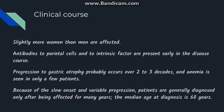Regarding clinical course, more women are affected than men, as with most autoimmune diseases. Antibodies to parietal cells and intrinsic factor can be seen early in the disease, but gastric atrophy probably occurs over two to three decades. Megaloblastic anemia is seen late in the course. Due to the very slow and variable progression, patients are generally diagnosed after being affected for many years, with a median diagnosis age of around 60 years.